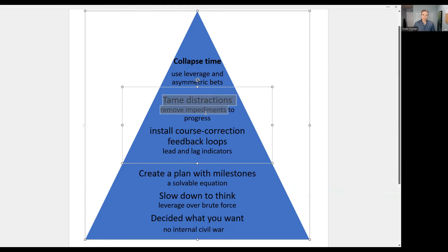After that, we want to then start taming the distractions. In other words, you decided what you want, you've thought about ways to do it intelligently, you created a plan, you created a way to measure your progress to make sure you don't wander. Now we want to tame distractions to essentially remove the impediments to your progress.